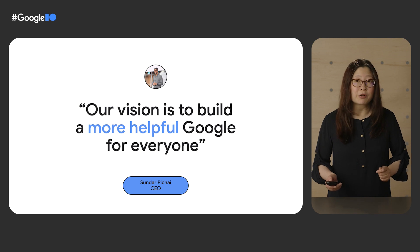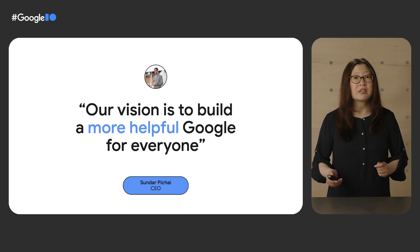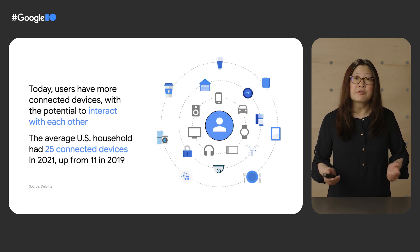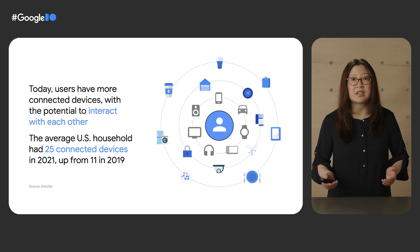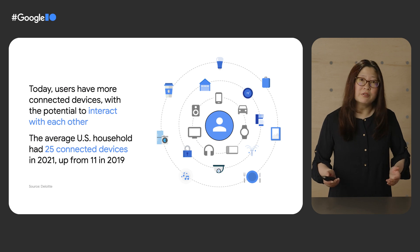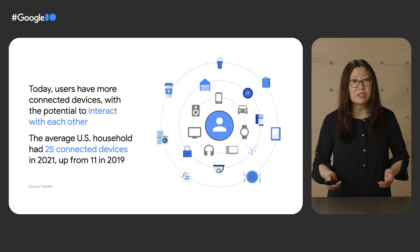Google's vision is to build a more helpful Google for everyone by making the world around us universally accessible and useful. What makes this challenging, though, is that users are buying more and more connected devices these days. In the US alone, the average household owns 25 connected devices now. These include not only your phones and laptops, but also your TVs, watches, smart speakers, and even cars.